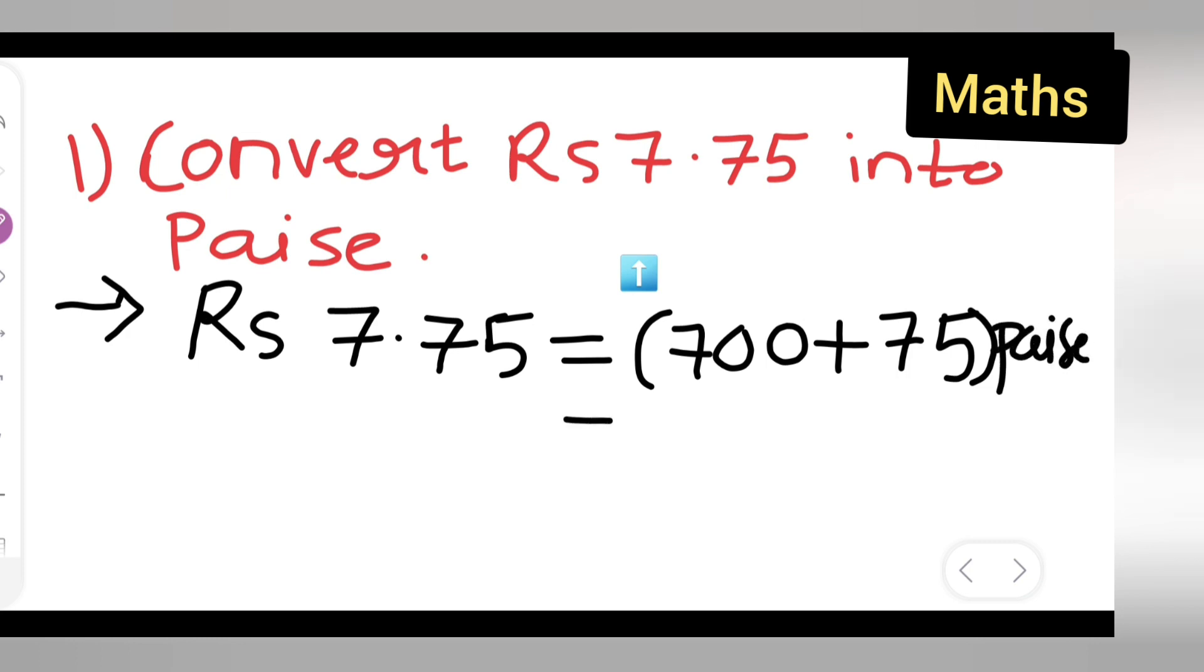So what you will get, add these two numbers. What I have done for this one, I have taken this 7.75 upon 100. I have taken this decimal out. So 700 plus 75 Paise.